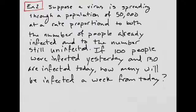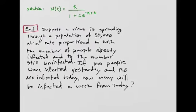Suppose a virus is spreading through a population of 50,000 at a rate proportional to both the number of people already infected and the number still uninfected. If 100 people were infected yesterday, so that will be our n sub zero or our initial population, and 130 are infected today, how many will be infected a week from today? So this is talking about the rate at which a virus spreads. It's not modeling the population, it's modeling the virus.